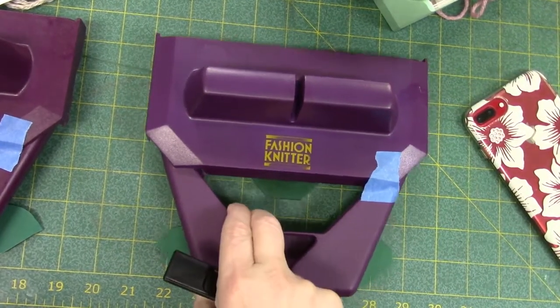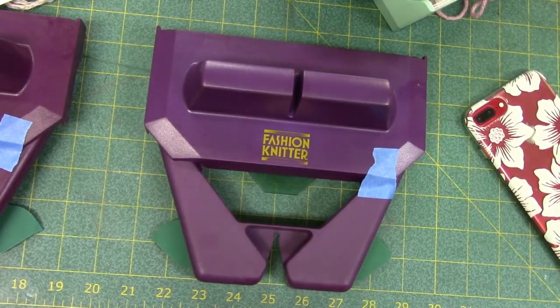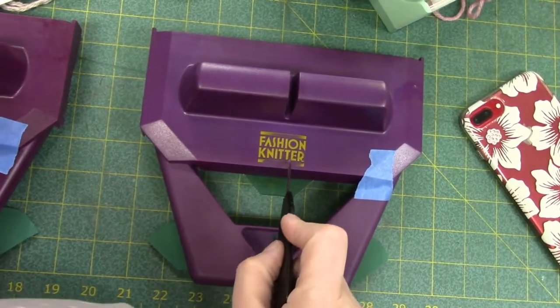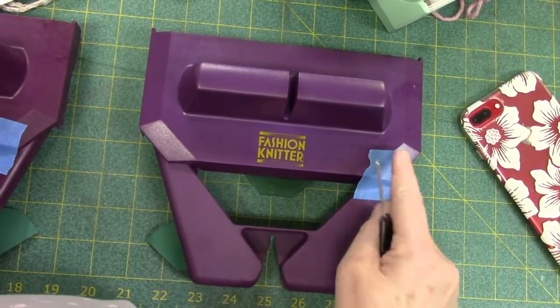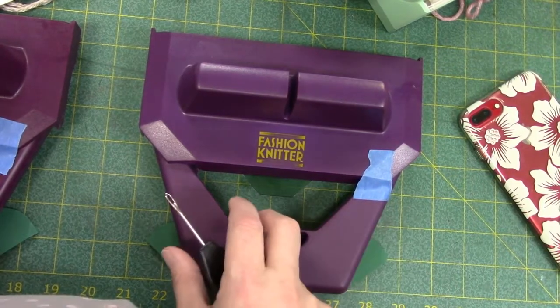I'm going to show you the problem areas on the defective carriages. This one was sold under the name of Fashion Knitter, but it's the same carriage as the Ultimate Sweater Machine.